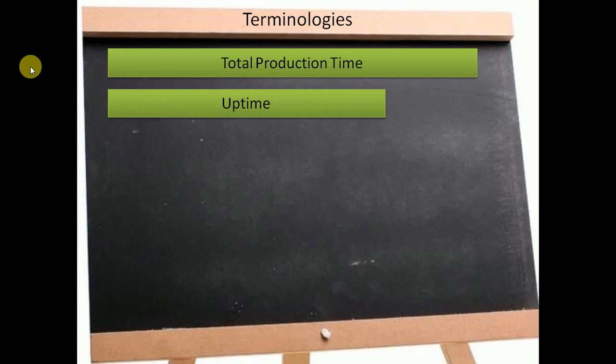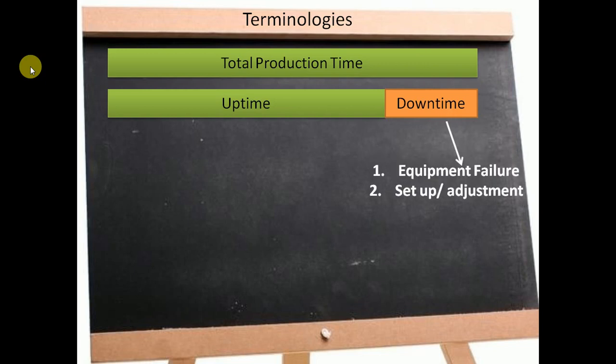Uptime is a portion of total production time available for production. Downtime is a portion of total production time lost due to equipment failure, setup or adjustment, and even due to changeovers.